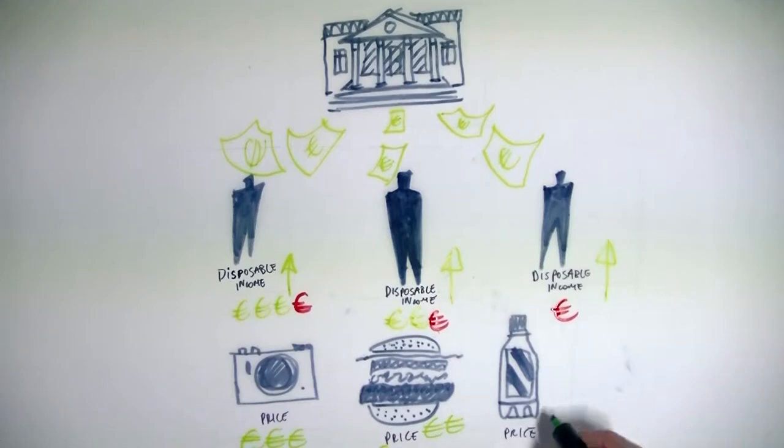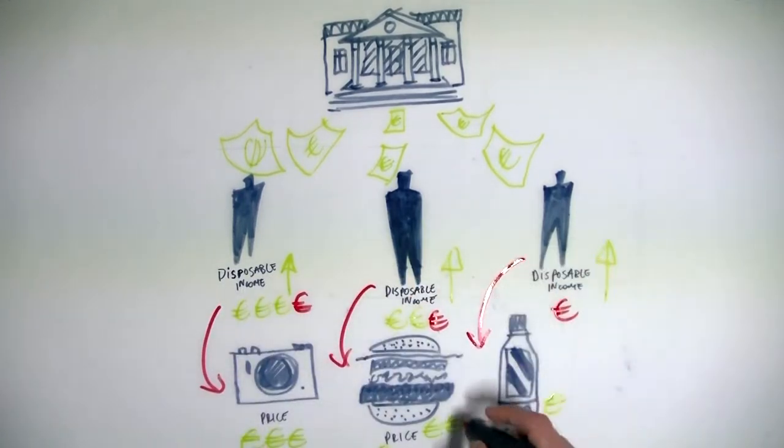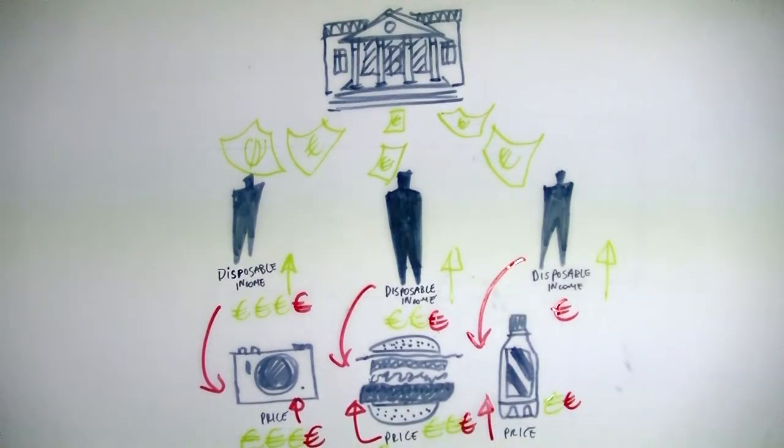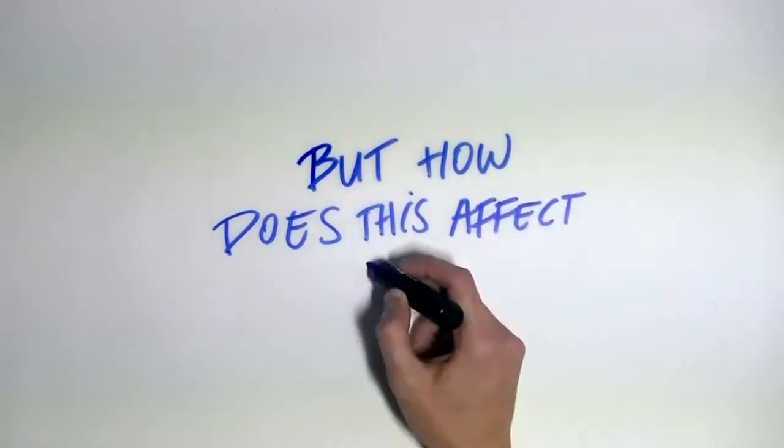In contrast, deflation is the opposite, the decrease in the general price of goods and services. And price stability implies maintaining inflation at a manageable rate of 2%. But how does this affect us?